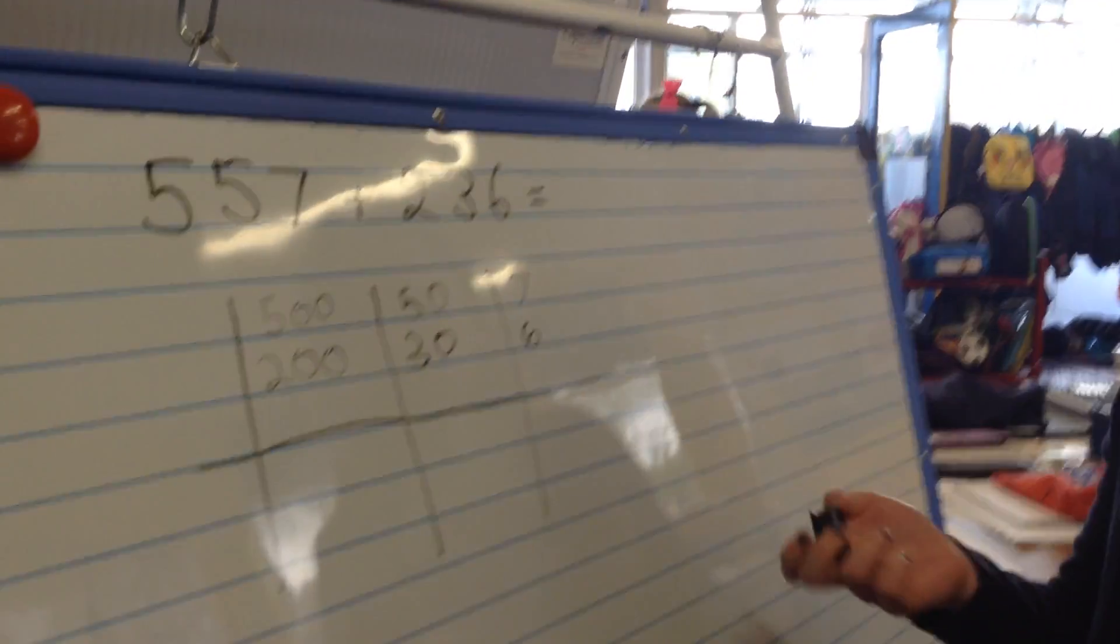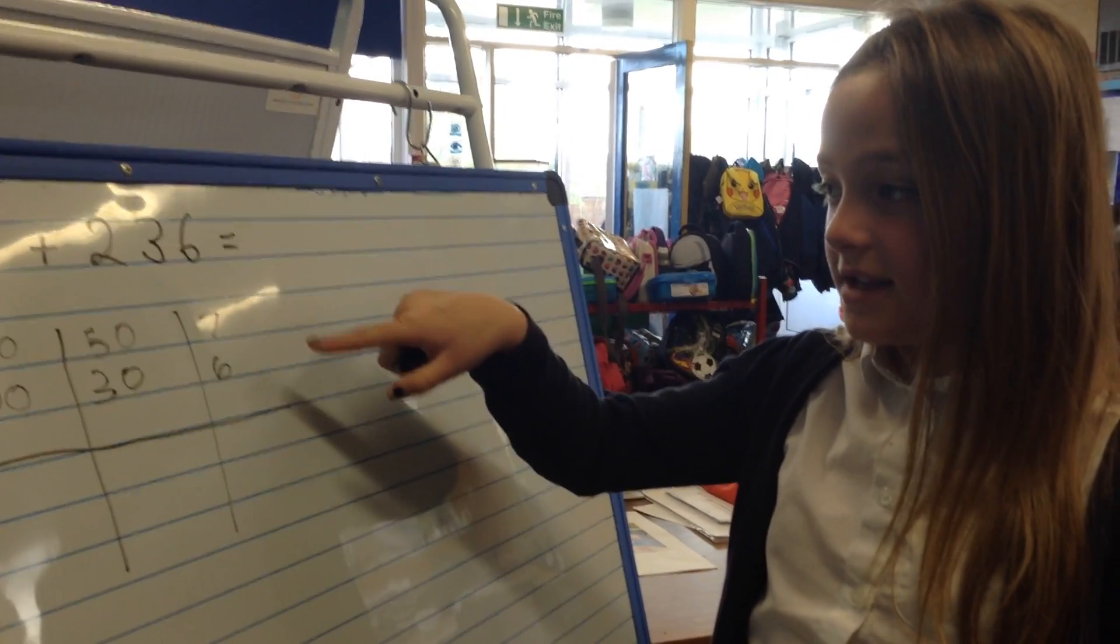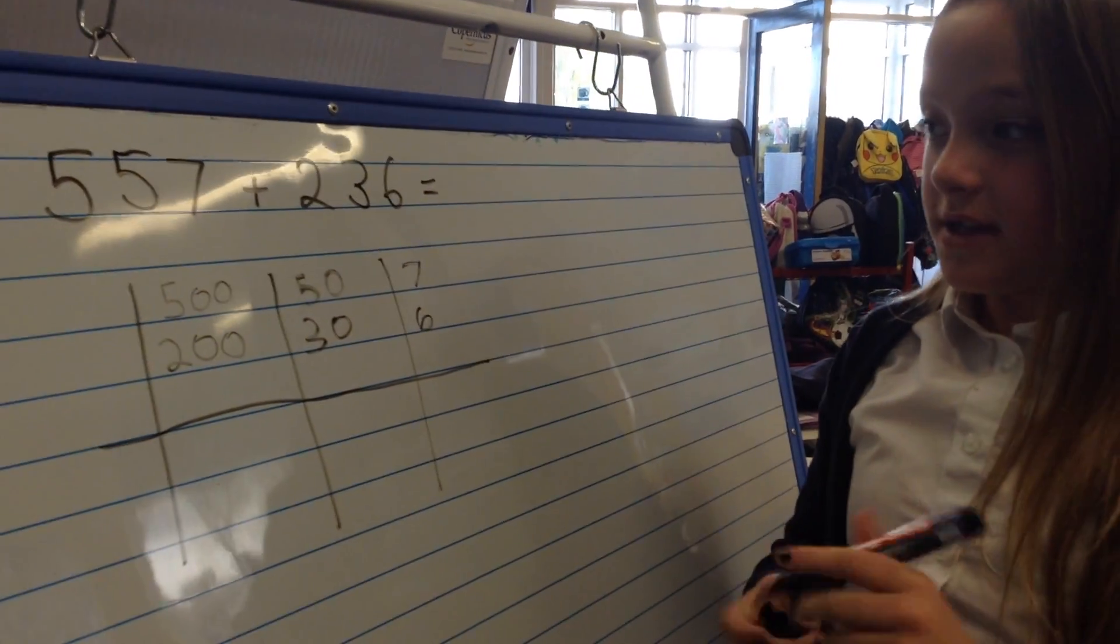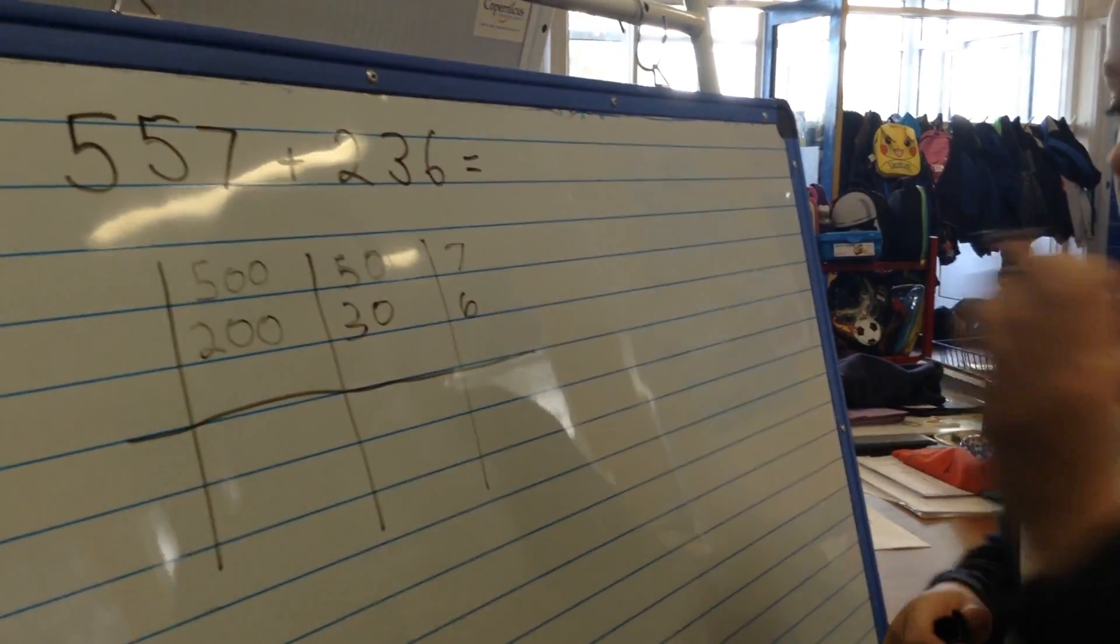And then you have to remember that you always have to start with the ones when you're adding them. So if you know that 7 and 7 is 14, you can take away 1 which makes 13.